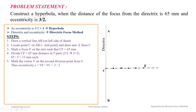Then we have to locate the vertex on this axis. The vertex is the point on the curve. Eccentricity is the ratio of the distance of a point on the curve from the focus divided by the distance of the same point from the directrix. So VF divided by VC should equal 3 by 2. We can locate the vertex at the second division from C and the third division from F, so that VF upon VC equals 3 by 2.